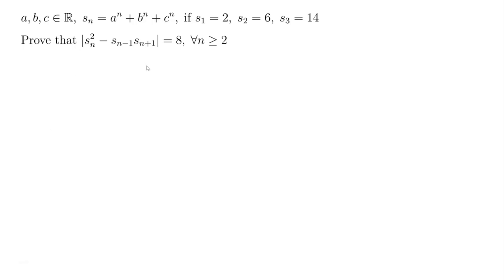We want to prove this expression: the absolute value of s_n squared minus s_{n-1} times s_{n+1}. This one is actually equal to 8 for any n larger or equal to 2.